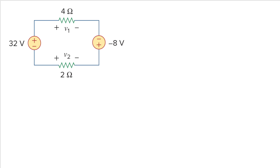Hello, we are going to solve this problem here. We are asked to find out what v1 and v2 are. This will be quite tricky, so we have to be very careful about the signs. I will do KVL at this loop here, and let's name this loop current as i1.